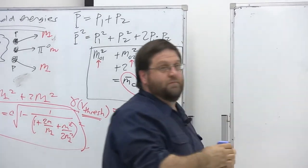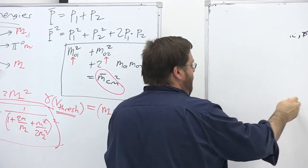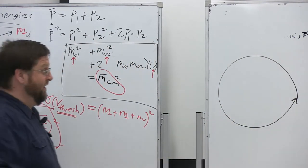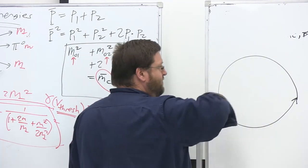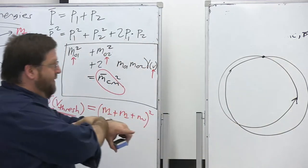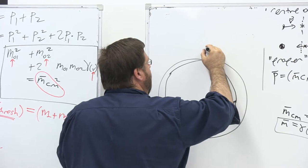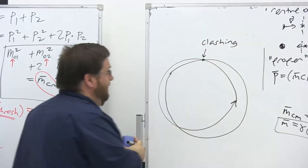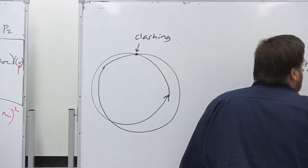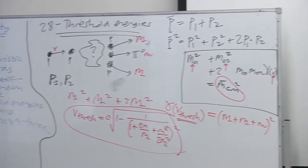The solution in particle accelerators is the technique of clashing beams. Rather than a stationary target, you accelerate positively charged particles anti-clockwise and corresponding negatively charged particles the other way, making them cross with equal and opposite velocities. The total momentum in the lab frame is zero, so minimal energy is wasted as momentum in the products. This is a much more efficient way of creating new particles than using a stationary target.